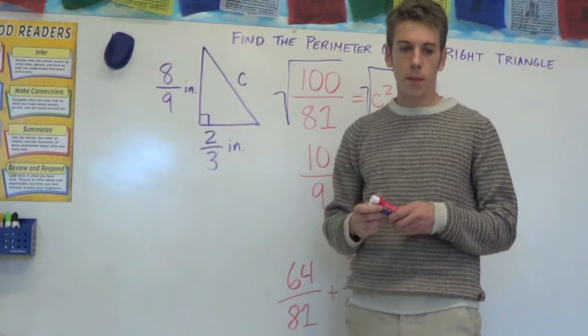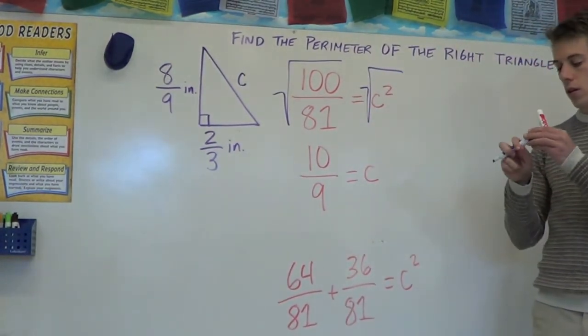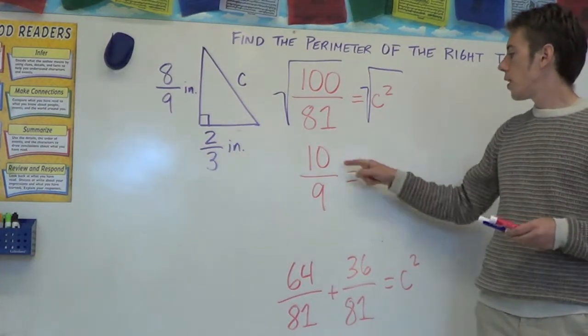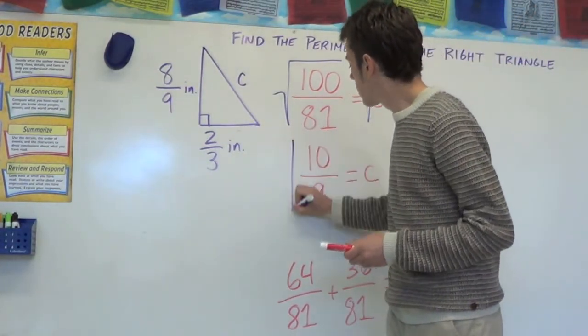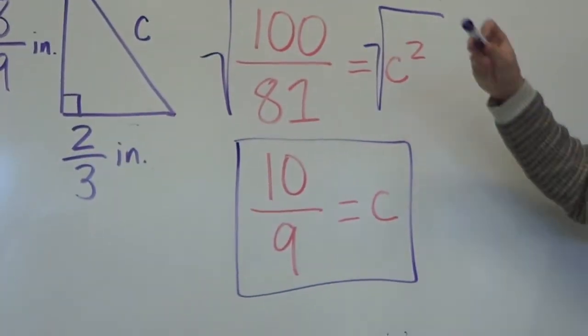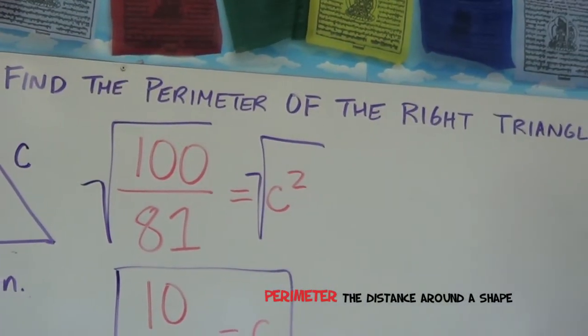Now the student who got this problem right actually stopped here. So she only got half credit on the problem. She said the answer was C is 10 ninths or 1 and 1 ninth. But what the question actually asked is to find the perimeter of the right triangle, not the hypotenuse.